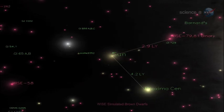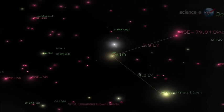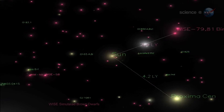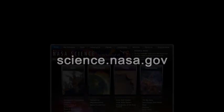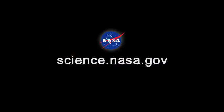With WISE, we may even find a brown dwarf closer to us than the closest known star, Proxima Centauri. Now that would be pretty cool news. For more information about stars, hot and cold, visit science.nasa.gov.